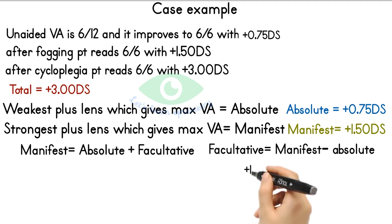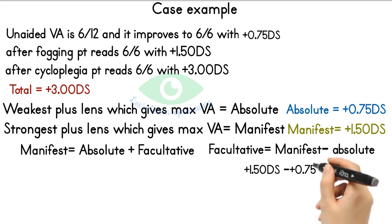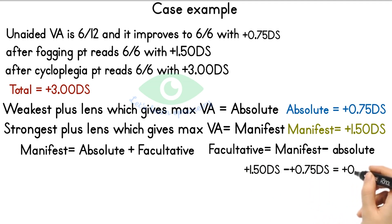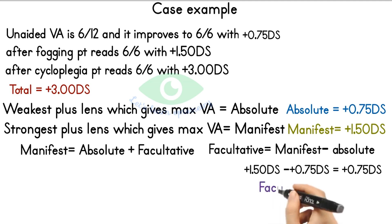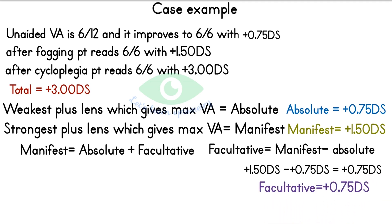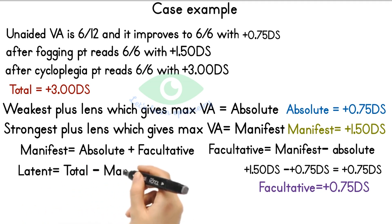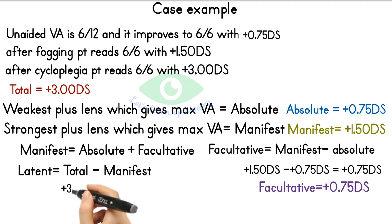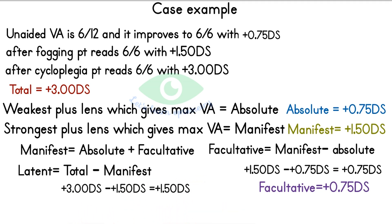So +1.5 D (manifest) minus +0.75 D (absolute) gives +0.75 D spherical, which is the facultative component. The latent component is found by subtracting manifest from total: +3.0 D minus +1.5 D gives +1.5 D spherical, which is the latent hypermetropia.